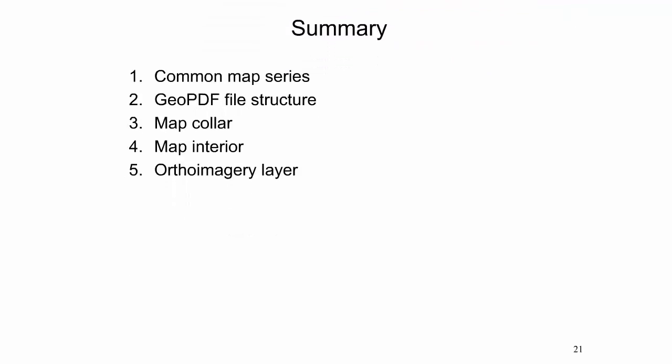This slide summarizes the presentation. It started with an introduction to common quadrangle sizes and map series, where the best-known maps are those of the 7.5-minute, 1:24,000 scale quadrangle series. Next, the presentation gave an introduction to the GeoPDF file structure of folders and layers. GeoPDF files facilitate coordinate readings, as well as distance and area measurements. Further, the presentation provided more detailed information about the elements of the map collar, the map interior, and the orthoimagery layer.